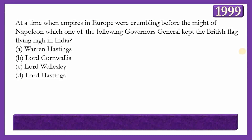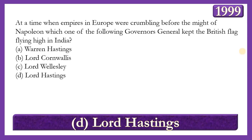Next question: At the time when empires in Europe were crumbling before the might of Napoleon, which one of the following governors-general kept the British flag flying high in India? Options: Warren Hastings, Lord Cornwallis, Lord Wellesley, or Lord Hastings. The answer is option D — Lord Hastings — through the Anglo-Nepalese War (1814-1816), suppression of the Pindaris, and the end of the Maratha Confederacy.